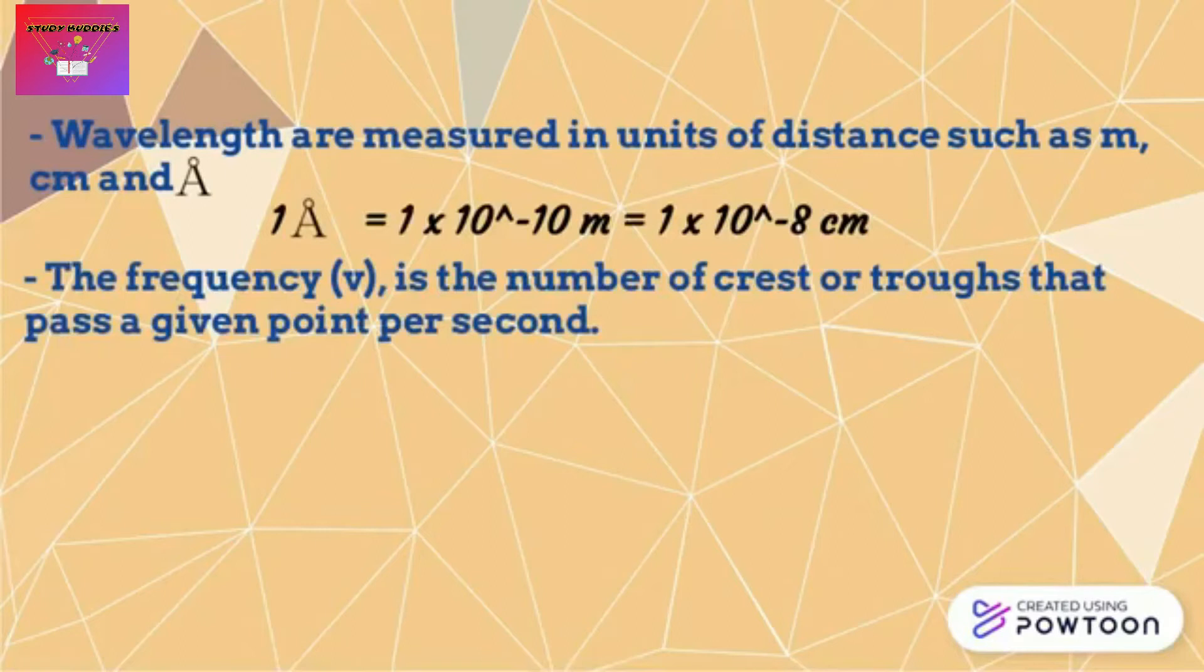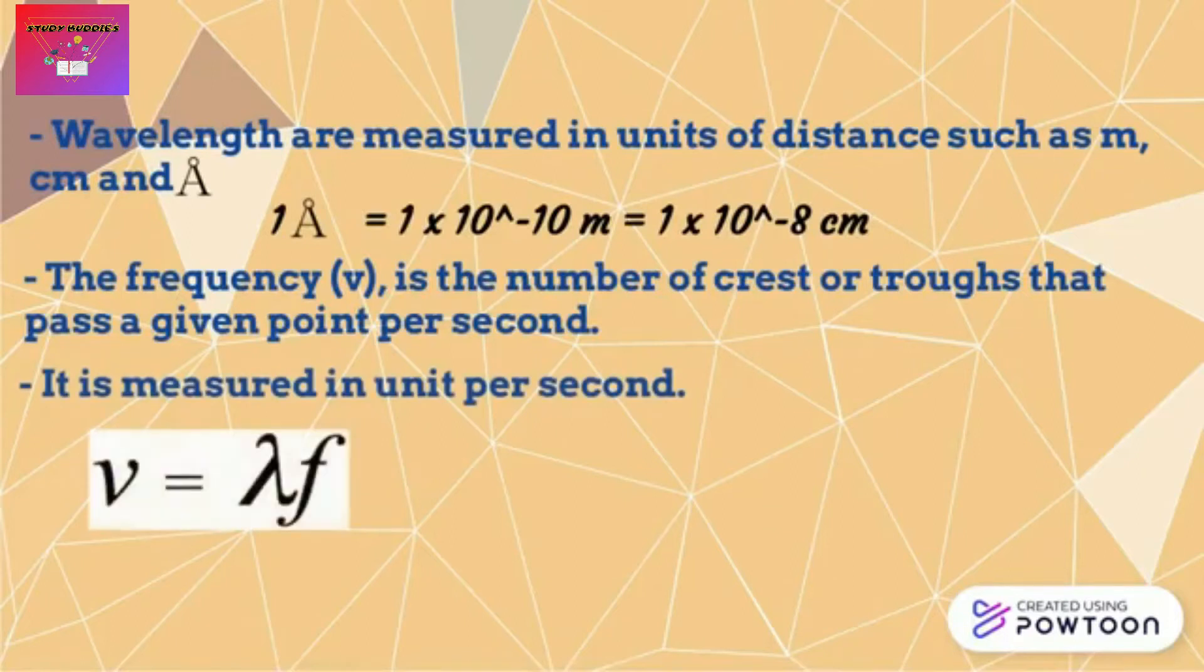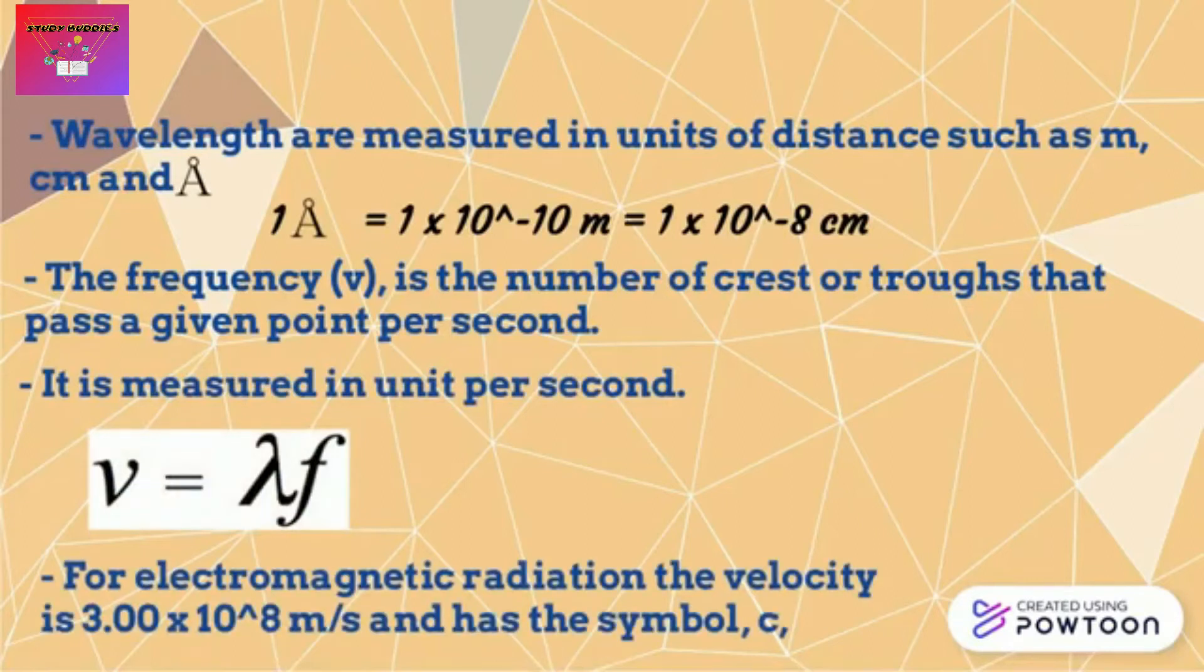Next, the frequency is the number of crests or troughs that pass a given point per second. Now let's look at the relationship between the wavelength and frequency of any waves. Velocity equals the wavelength multiplied with the frequency. And for electromagnetic radiation, the velocity will be 3 times 10 to the power of 8 meter per second and has the symbol C.